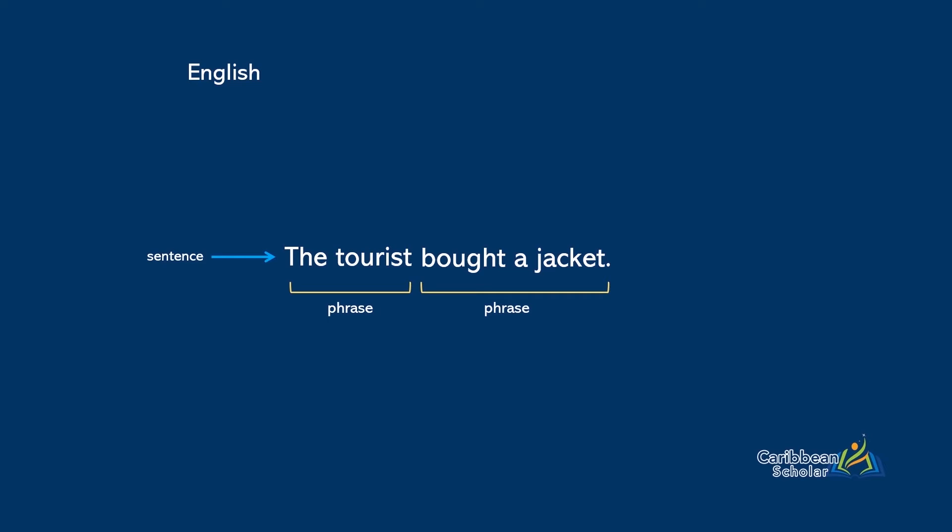Now a single phrase on its own does not make much sense. So if we focused on bought a jacket, you'd see it doesn't tell you very much on its own. But that's okay because in order to make sentences, we need phrases. So phrases make up a pretty big part of the foundation of the English language.